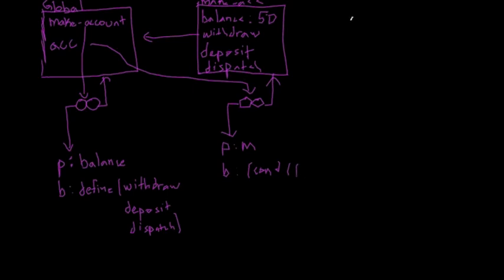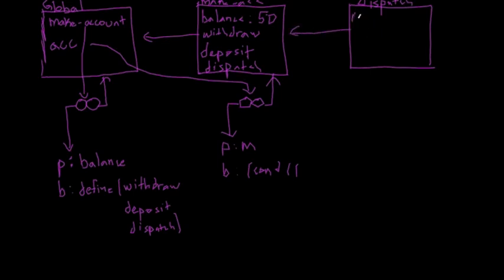If we draw a frame for dispatch, it points back to make-account. It has a message — in our case, we're calling ACC on deposit, so our message will be deposit. From here we can't really do anything yet, because we know that calling ACC on deposit returns another procedure: the deposit procedure. We need to define deposit first.